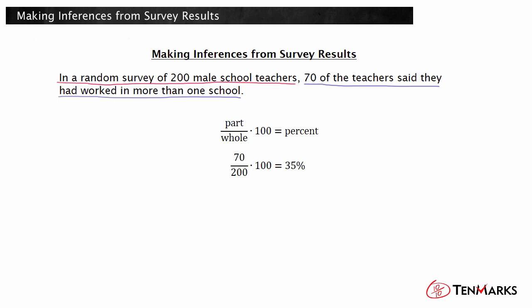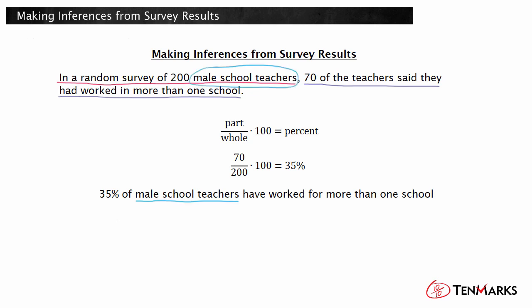It is important to remember that you can only make inferences about the population from which the sample was selected. Here, the sample was randomly selected from the population of all male school teachers. So it's not 35% of all teachers, but 35% of male school teachers who have worked for more than one school.